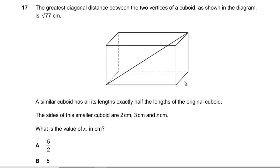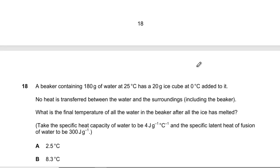Question 17: The greatest diagonal distance between two vertices of the cuboid shown in the diagram is √77. Similar cuboid has all its lengths exactly half of the original. Sides of the smaller cuboid are shown. Using Pythagoras, 77/4 equals 2² + 3² + x². So 77/4 minus 13 gives 25/4, so x equals 5/2.